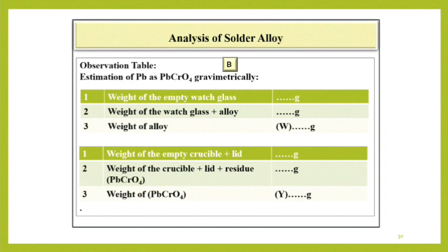Weight of the empty crucible as W1 gram. Weight of the crucible plus residue as W2 gram. Take the difference of these two. You will get the weight of PbCrO4 residue as Y gram.